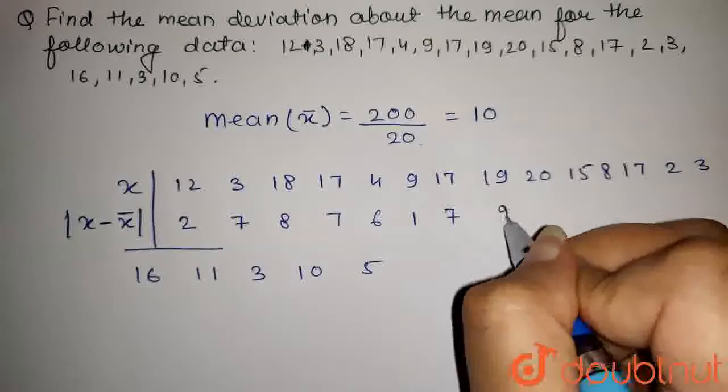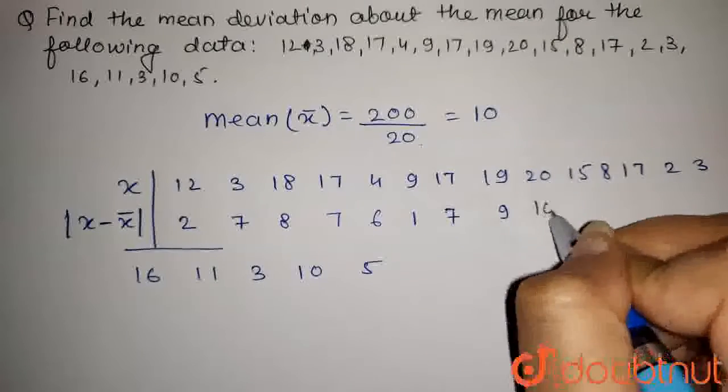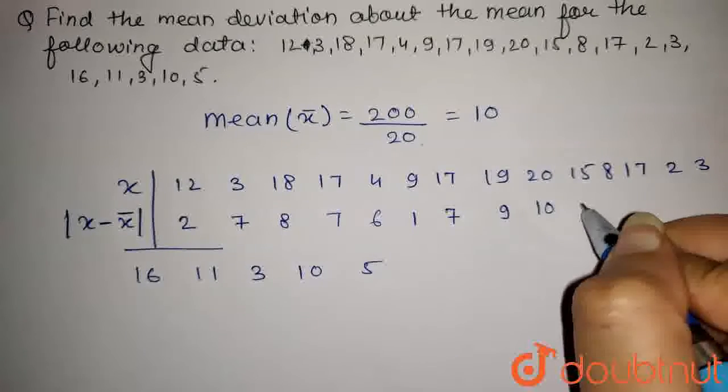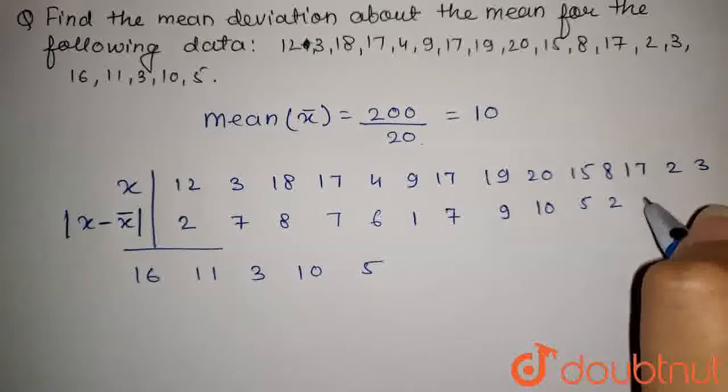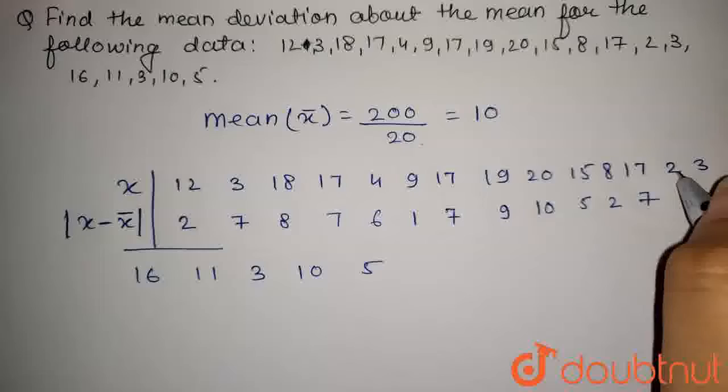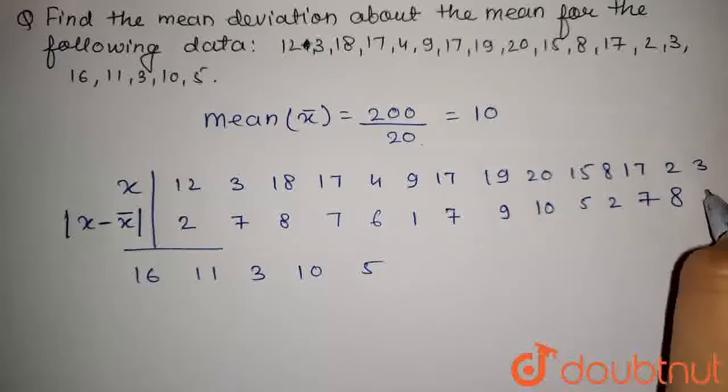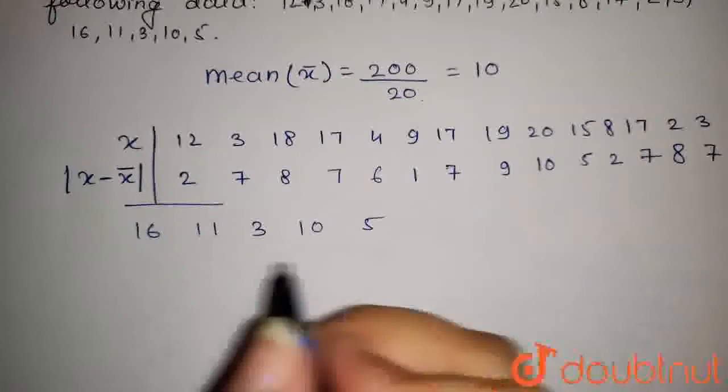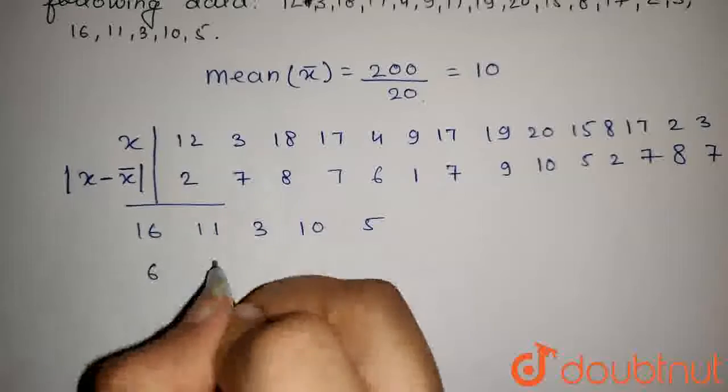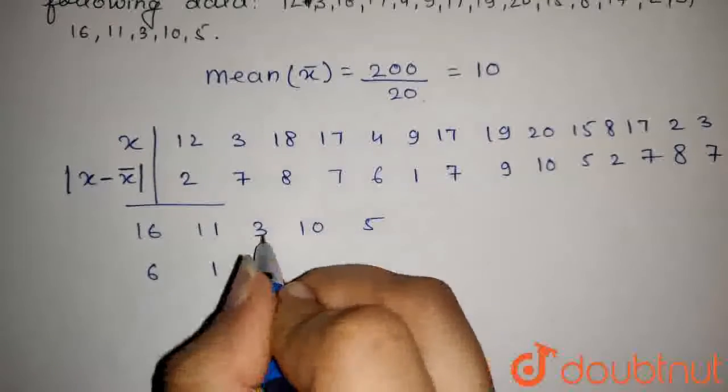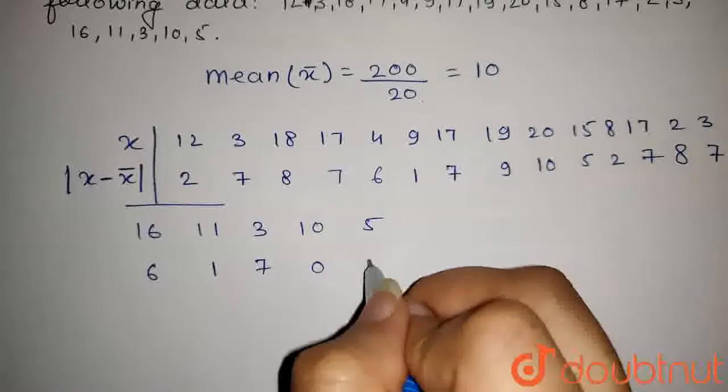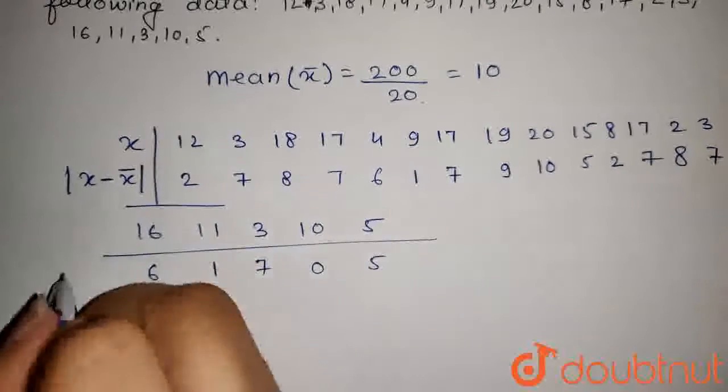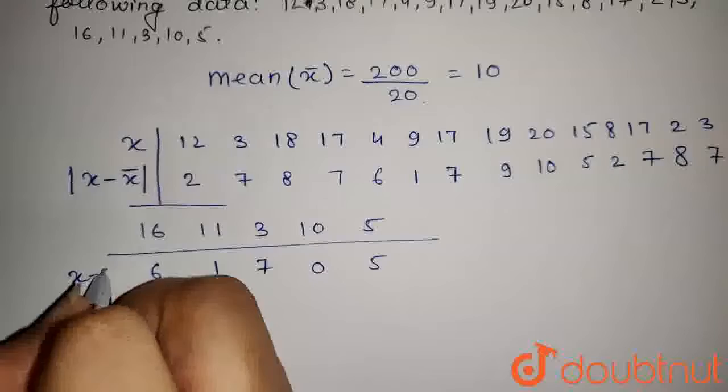19 minus 10 is 9, 20 minus 10 is 10, 15 minus 10 is 5, 8 minus 10 is 2, 17 minus 10 is 7, 2 minus 10 is 8, 3 minus 10 is 7. And this, 16 minus 10 is 6, 10 minus 11 is 1, 3 minus 10 is 7, 10 minus 10 is 0, and 5 minus 10 is 5. So, these are x minus x bar.